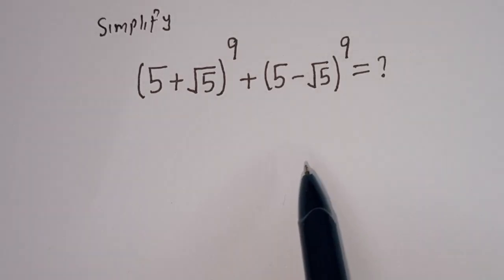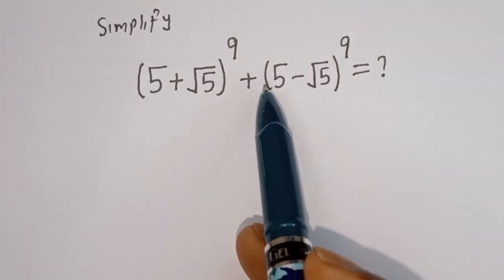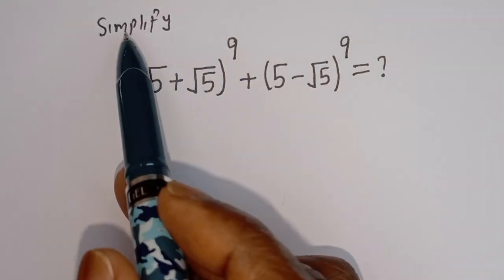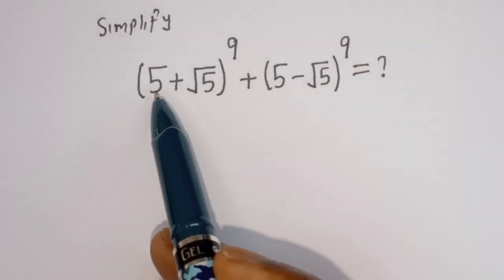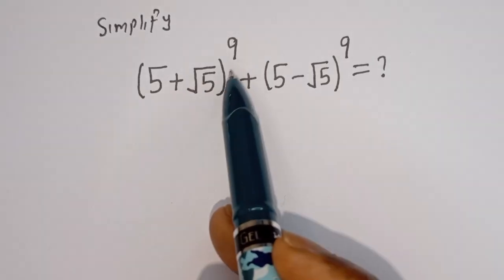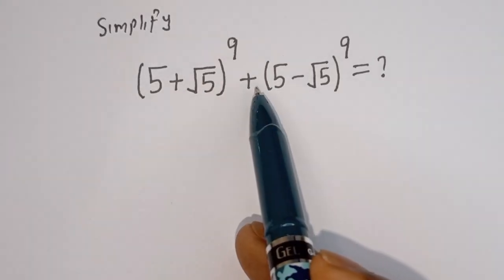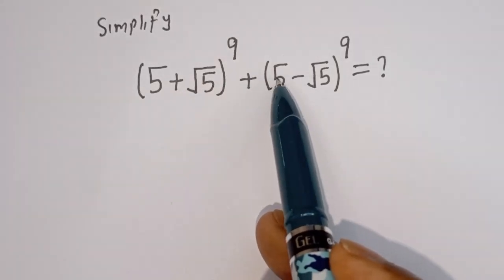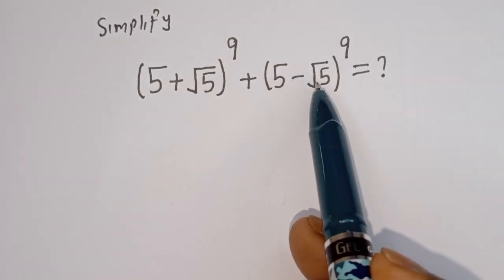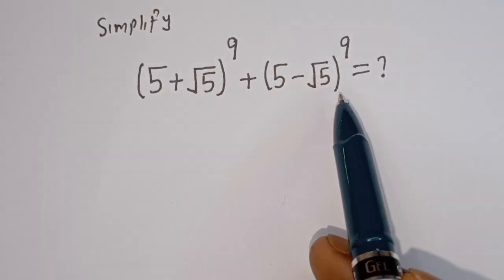Hello! How to simplify this nice math problem without using calculators? 5 plus square root of 5 to the power of 9, plus 5 minus square root of 5 to the power of 9.